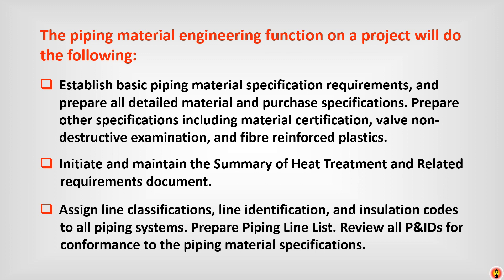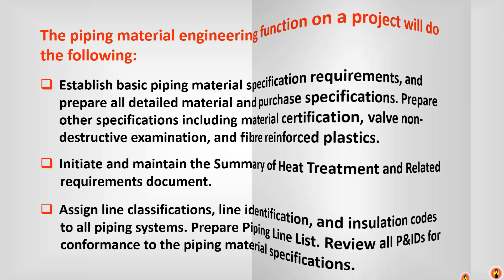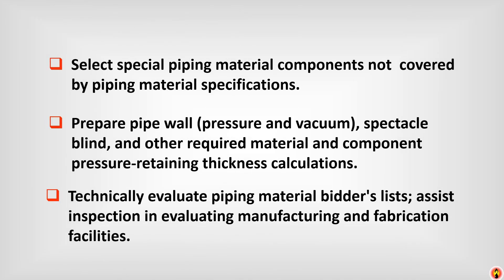Prepare piping line list. Review all entities for conformance to the piping material specifications. Select special piping material components not covered by piping material specifications and prepare pipe wall, spectacle blind and other required material and component pressure retaining thickness calculations. Technically evaluate piping material bidders list.